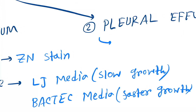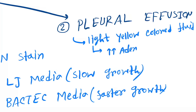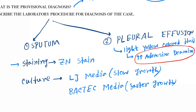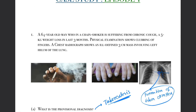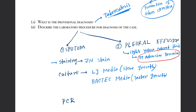For pleural effusion, you first take the fluid — it is a light yellow color fluid. By doing an enzymatic test on this fluid, we can see that there is an increased level of adenosine deaminase. This is the enzymatic marker of pleural effusion where tuberculosis has occurred. So this was the diagnosis of tuberculosis and the laboratory findings for confirmation.